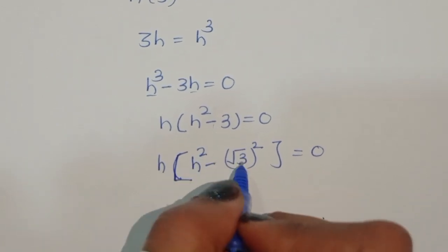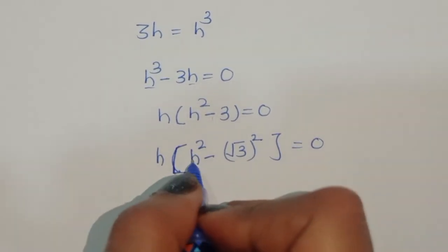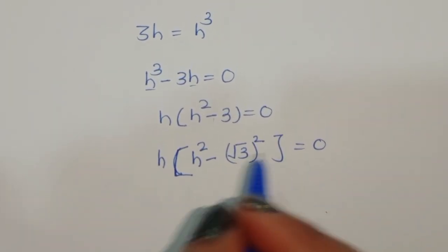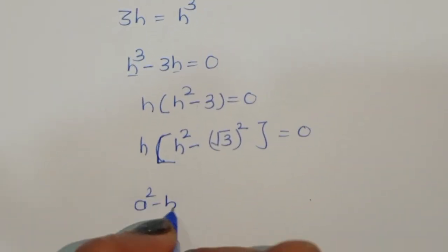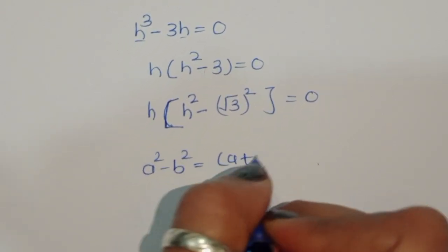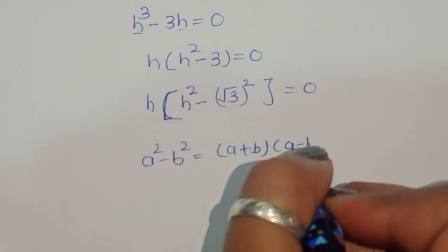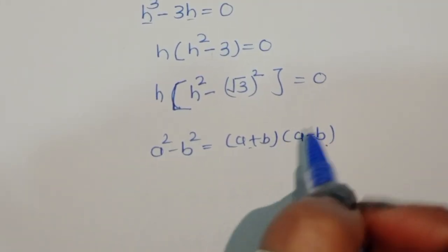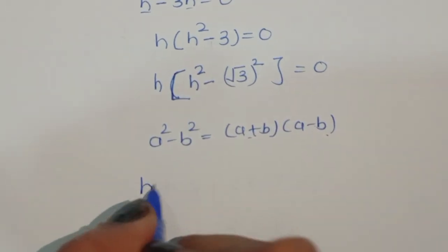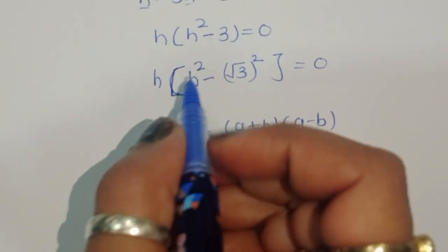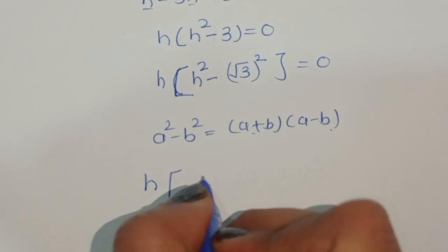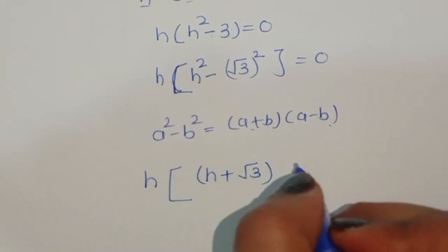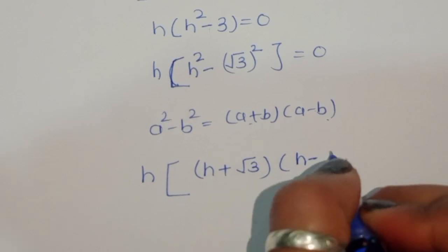This is in the form of a squared minus b squared, where a is h and b is square root of 3. Using the formula a squared minus b squared equals (a plus b)(a minus b), we convert the expression into this factored form.